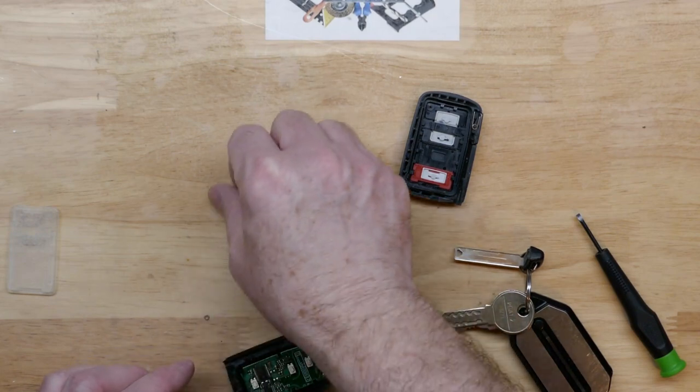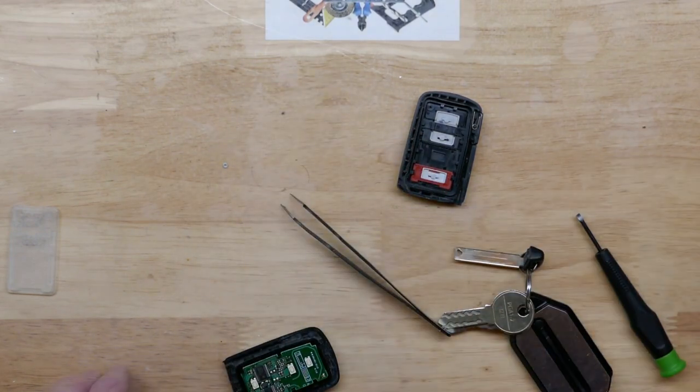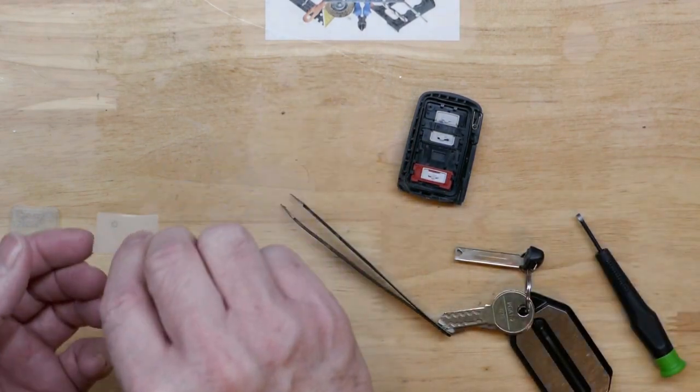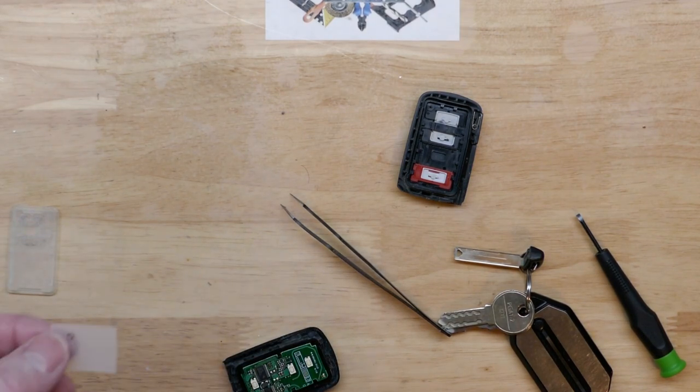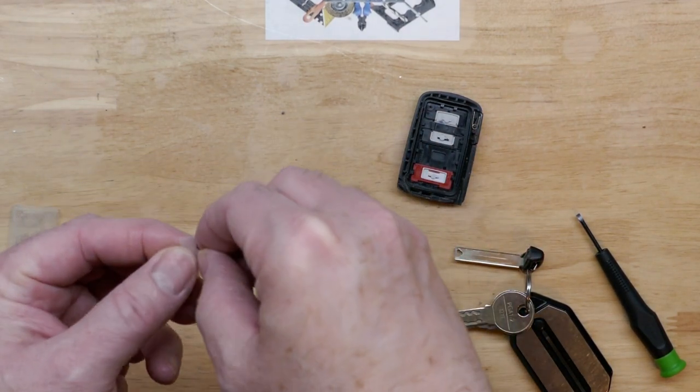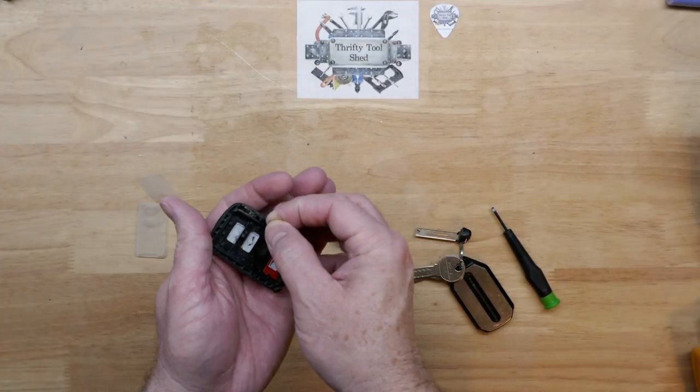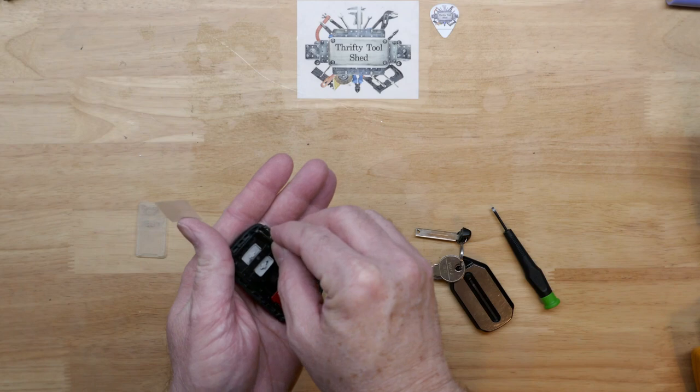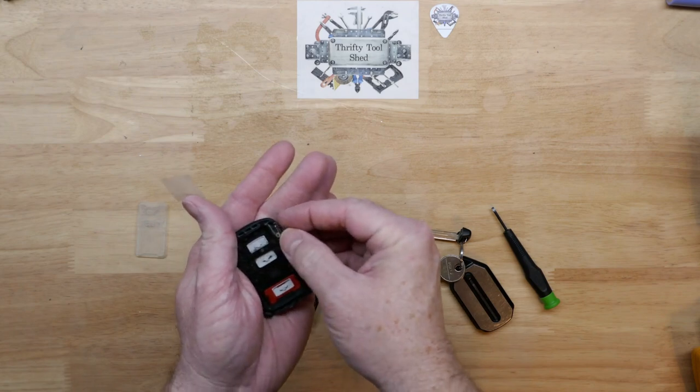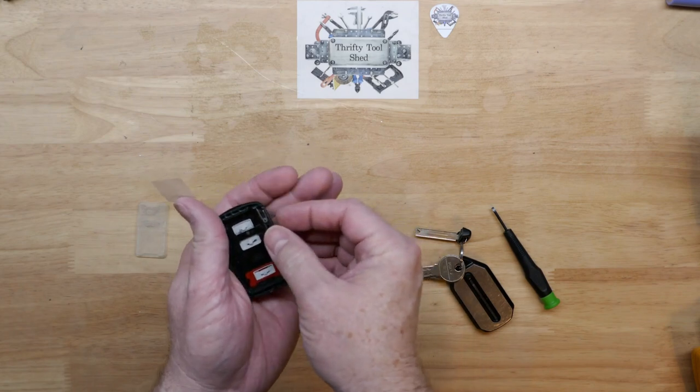Now the trick is picking this little tiny washer up. Even my tweezers don't want to get it, so I'm going to grab some tape and we'll use the tape to pick it up. We'll take this little bitty washer and see if it'll stay back in place here. Let's see if we can push it on there and see if it'll stay.